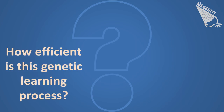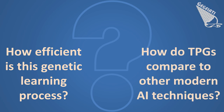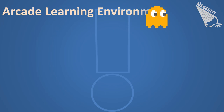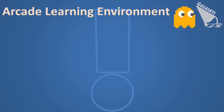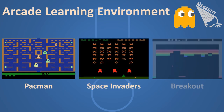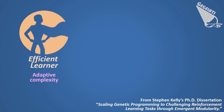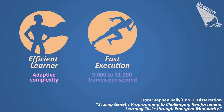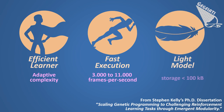Two natural questions to ask ourselves are: how efficient is this genetic learning process, and how do tangled program graphs compare to other modern artificial intelligence techniques? To answer these questions, the performance of TPGs have been evaluated within the arcade learning environment, a framework for training artificial intelligences to play old video games. It offers a collection of 50 Atari video games like Pac-Man, Space Invaders, or Breakout. The main strengths of tangled program graphs observed in this environment are: first, the efficiency of its training, which automatically adapts the TPG complexity to each game and reaches superhuman high scores; second, the rapidity of its computation, which requires only a few microseconds to process each frame on a common desktop computer; and third, the simplicity of its model, which requires at most a hundred kilobytes of storage for the trained graph and its programs.